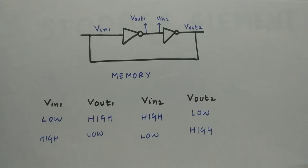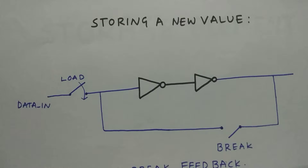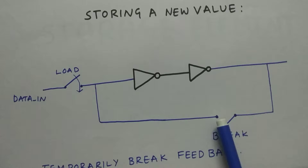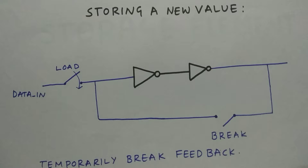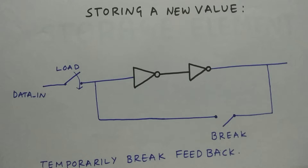So what if you want to load a new value into the storage element? Suppose it is currently storing zero and we want to load a new value of one — how do we load it? To load a new value, we need to break the feedback temporarily. Breaking the feedback is important. We load the new value by giving it through the data input. Once the value passes through the inverters, we can turn the feedback back on and turn off the load. That's how we add a new value to the circuit.